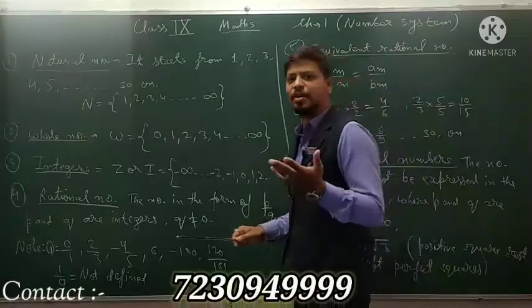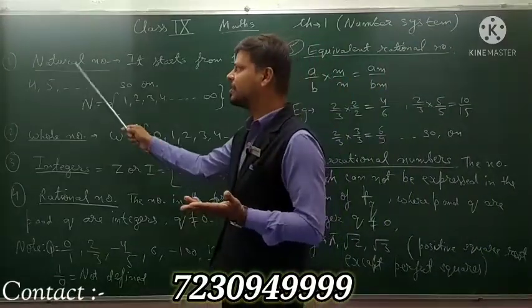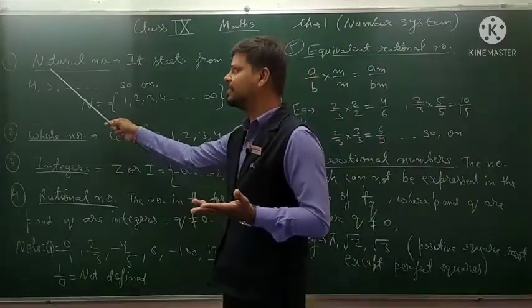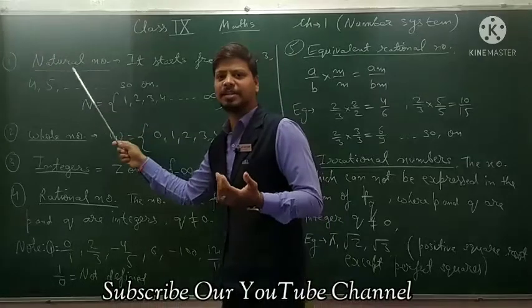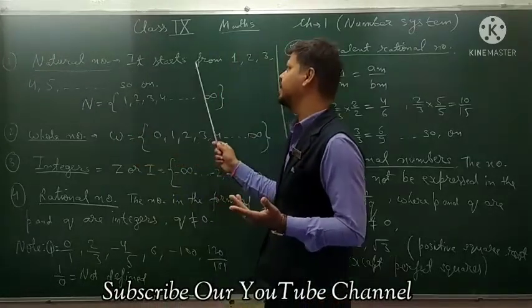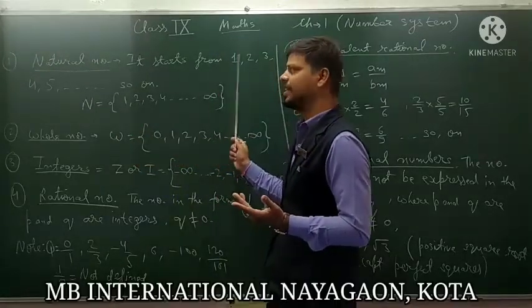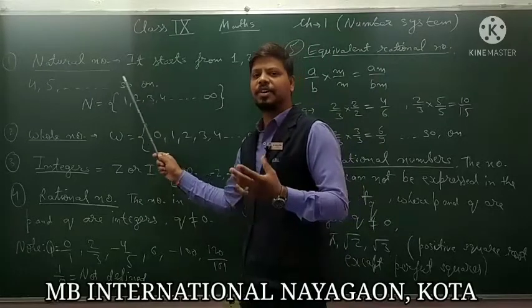So first of all we discuss about the numbers. What is a number? The first number given to you is the natural number. What is the natural number? The numbers which start from 1, 2, 3, 4, 5, up to so on.